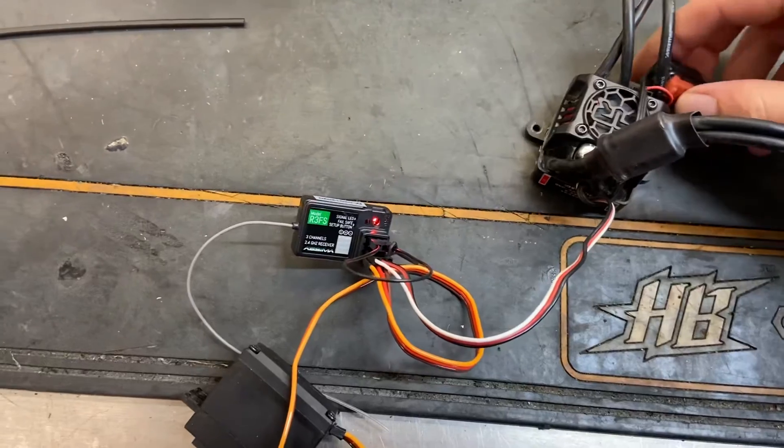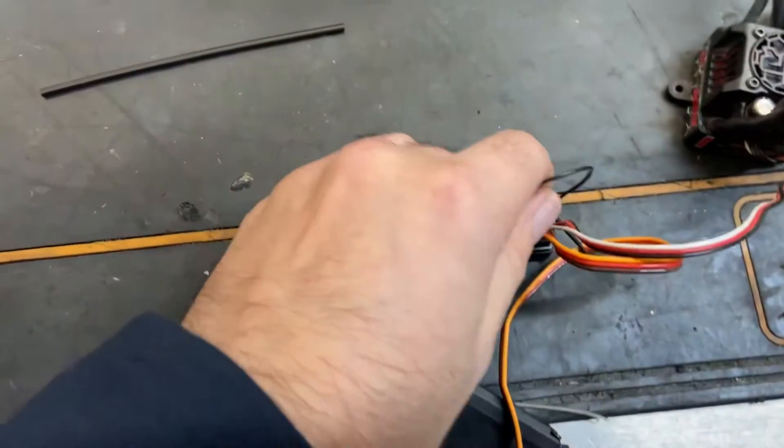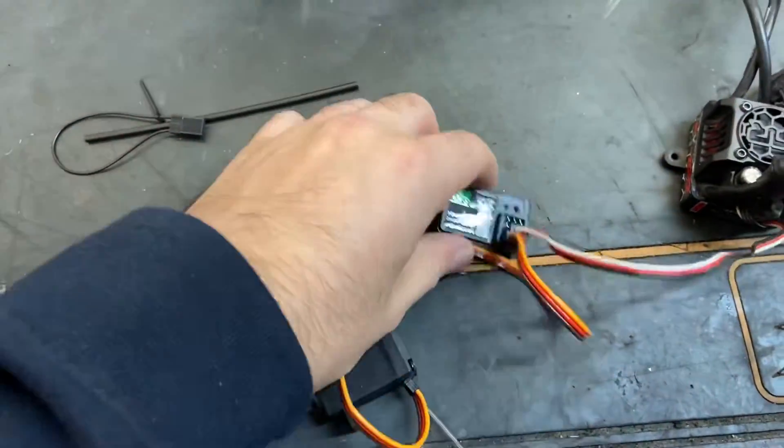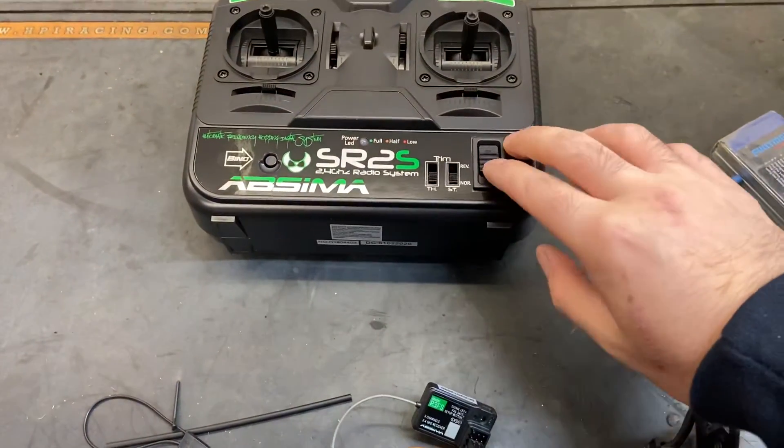So then power off the receiver, power off the transmitter, then remove the bind key because we don't use that when operating the radio. Then see if it's bound. Power the transmitter on.